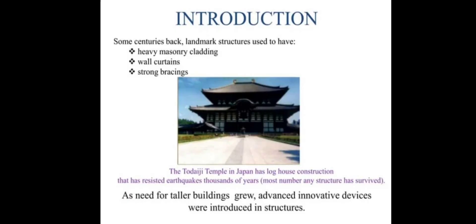Let's come to the introduction part. Before centuries, landmark structures were made which consist of heavy masonry cladding, wall curtains, and strong bracings. The Jagi Temple in Japan is one of the best examples of this. As the need for taller buildings grew, advanced innovative devices were introduced in structures. The Jagi Temple in Japan has a long house construction that has resisted earthquakes for thousands of years.